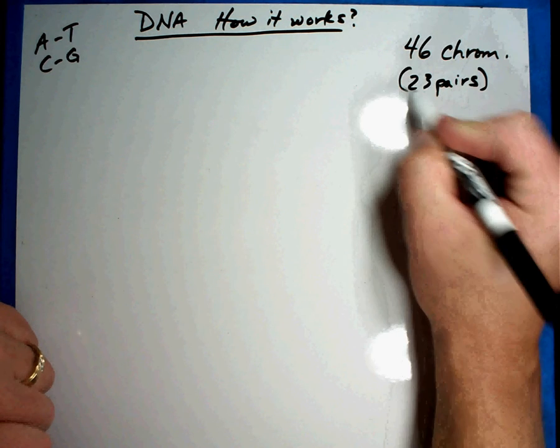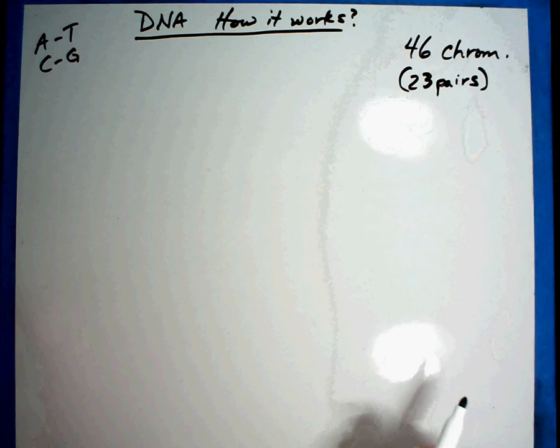You have 23 pairs of chromosomes, those 23 pairs of each of those pairs, half came from your mom, half came from your dad, tells everything about you.